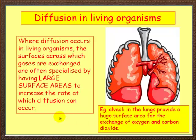In any living organism, diffusion occurs in many places. The surfaces across which gases are exchanged are often specialized and have large surface areas, because that increases the rate of diffusion. An example is the human lungs, which have little structures inside called alveoli that provide a huge surface area. In fact, if you spread all the alveoli out, you'd have an area the size of a tennis court inside your lungs — which is enormous, but really effective for the exchange of oxygen and carbon dioxide.